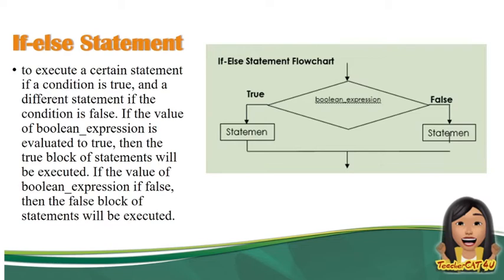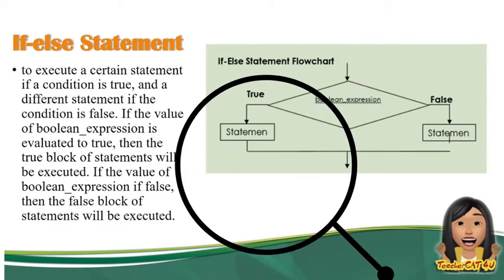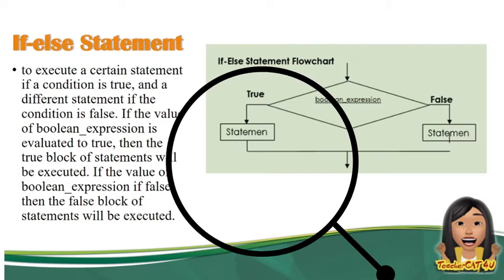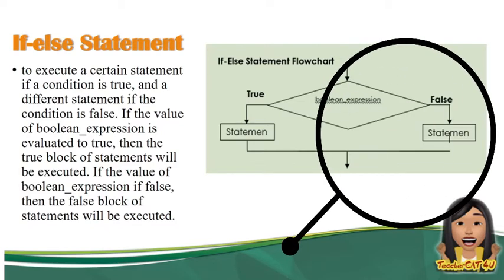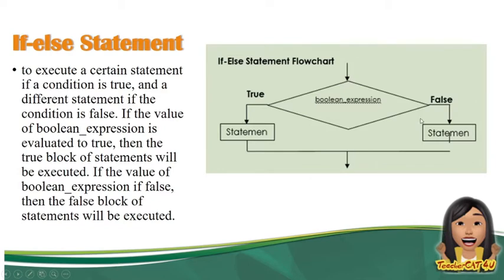So, if the value of the boolean expression is evaluated to true, then it will perform the true block of statement. If the value of the boolean expression is false, then the false block of statement will be executed. For example, from the given flow chart — if the given condition is true, it executes the true statement; if false, the false statement.